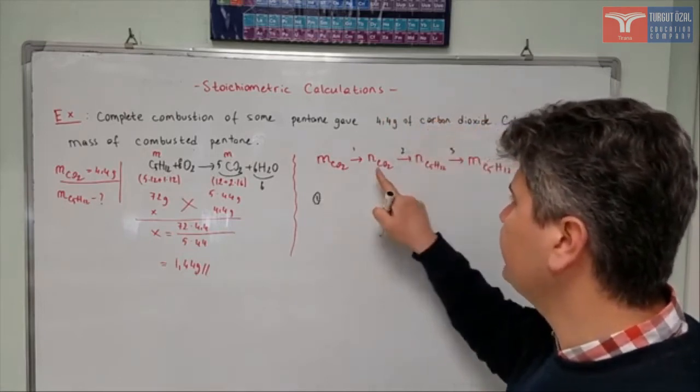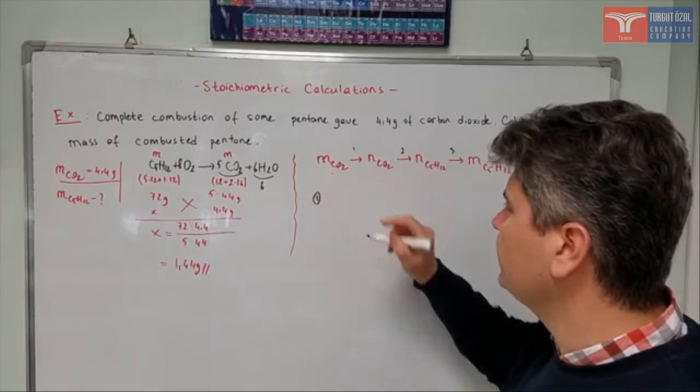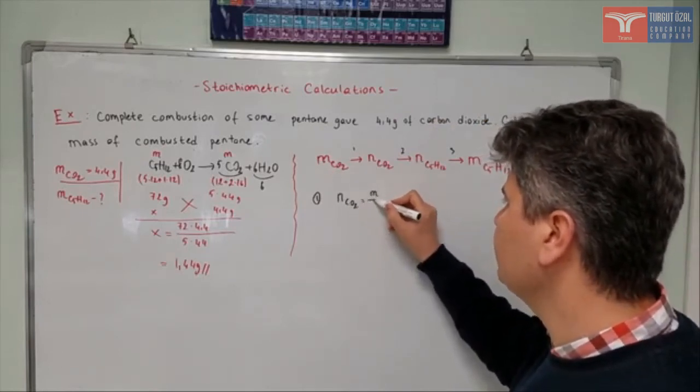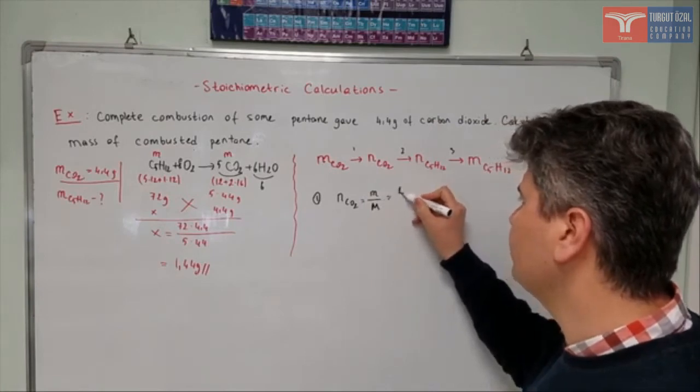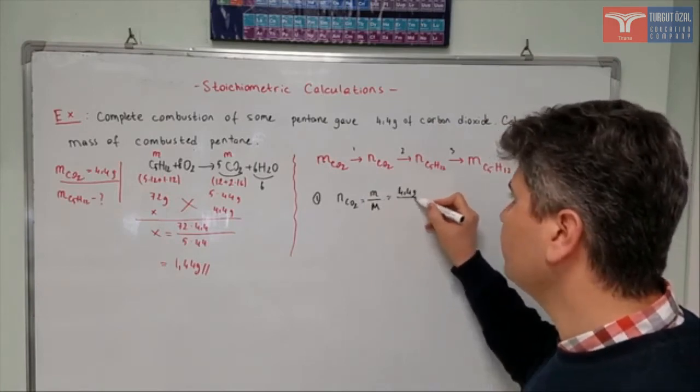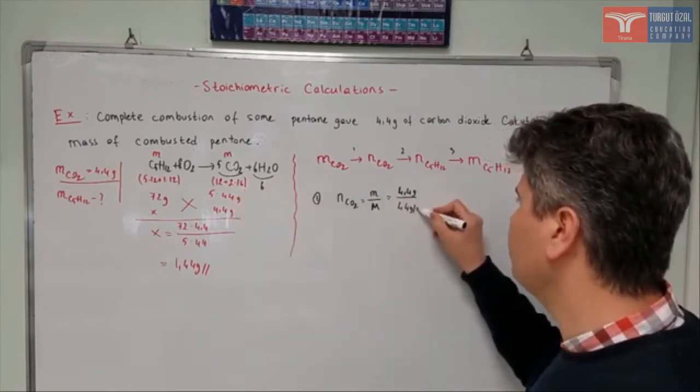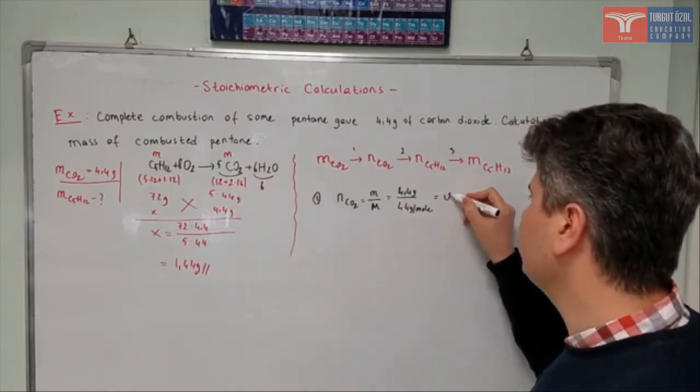So the first step is to find the mole number of carbon dioxide from its mass. Mole number of carbon dioxide will be mass divided by molar mass. Mass is given to be 4.4 grams. We have calculated the molar mass to be 44. So it's going to be 44 grams per mole. It is going to be 0.1 mole.